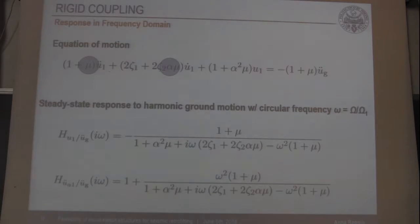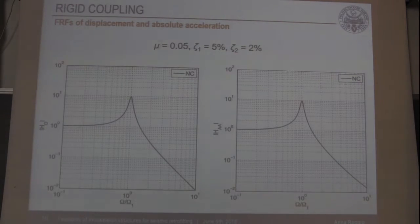These two response quantities are of interest because they are correlated to structural damage. In these figures, I illustrate the amplitude of the frequency response function in terms of displacement and absolute acceleration. The peak response corresponds to the resonance response of the main structure. This curve refers to the uncontrolled configuration.